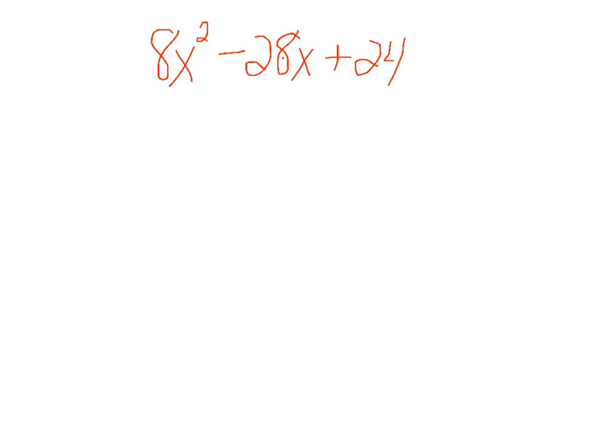Let's do one more example of this, since this tends to be the process that causes the most trouble. One thing to keep in mind when factoring is you always want to look for common factors first. In this case, 8, 28, and 24.